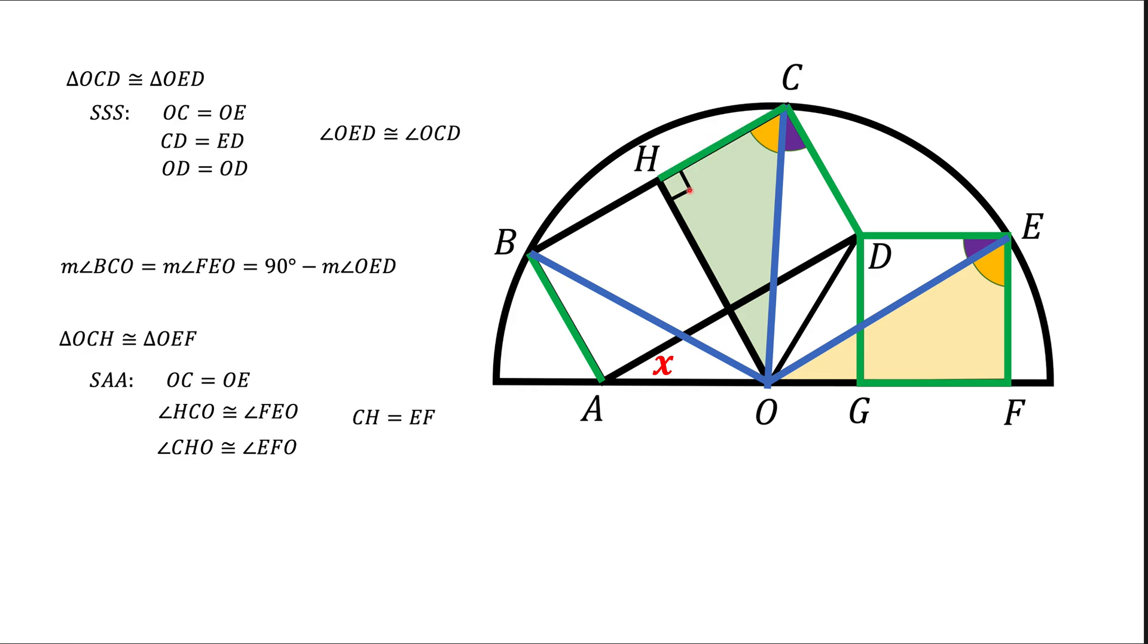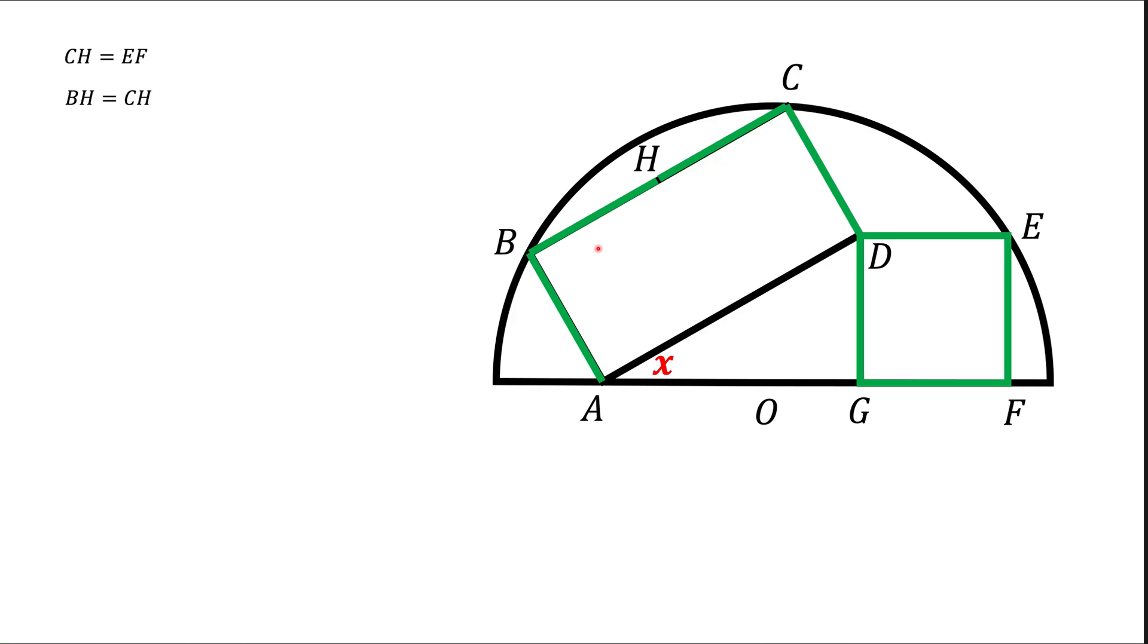The next thing we're going to do is we're going to notice, since OH is the side BC bisector and CH equals to BH, BH should also be green. And, now, notice, we have a rectangle ABCD and one side BC is twice as long as the side CD. Now, BC is the same length as AD.